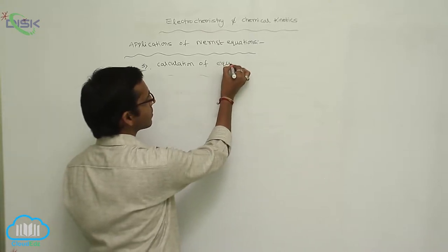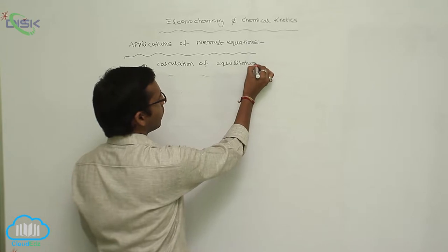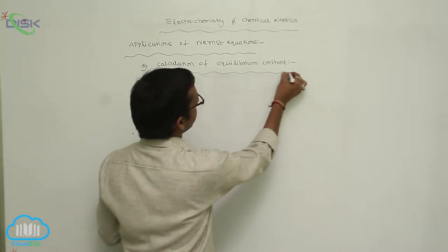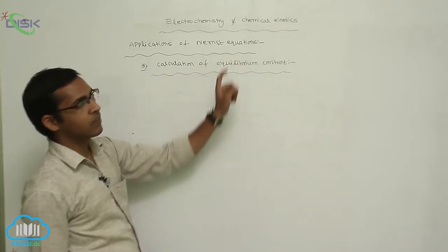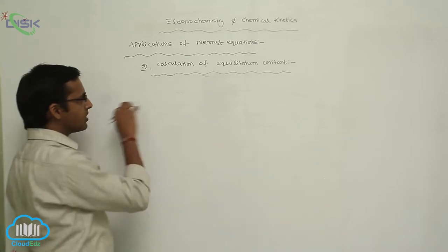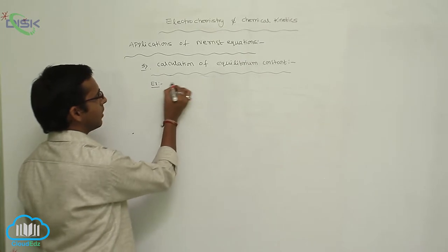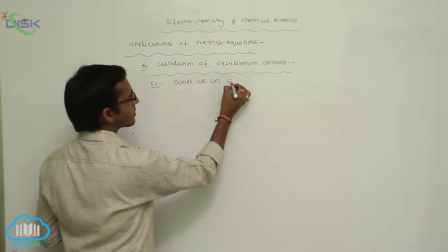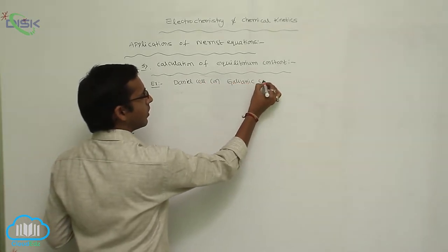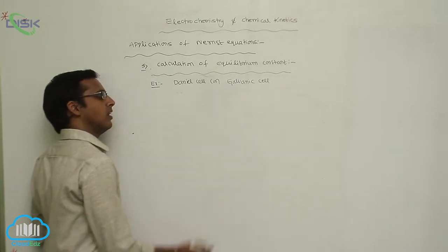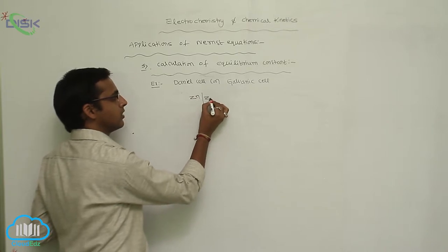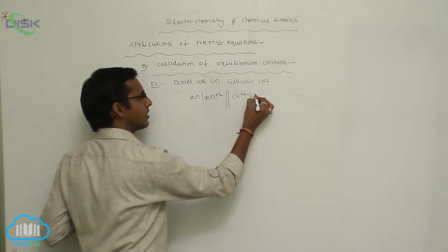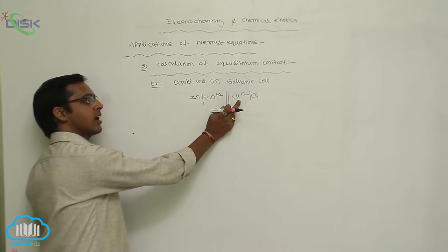Calculation of equilibrium constant with help of the Nernst equation. For this equilibrium constant, consider a simple reaction: the Daniel cell or galvanic cell. The galvanic cell reaction involves zinc metal and copper metal. Here zinc acts as the reducing agent.